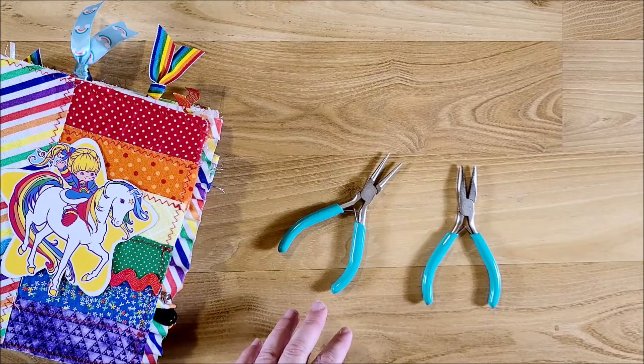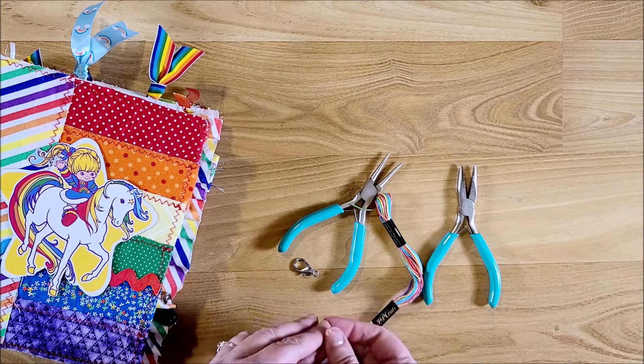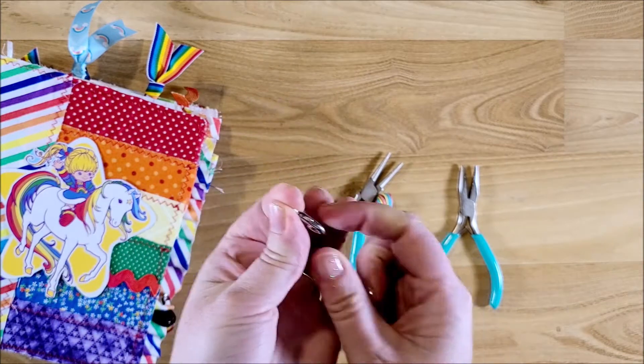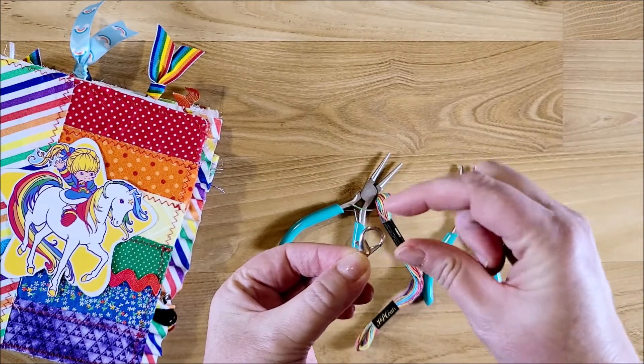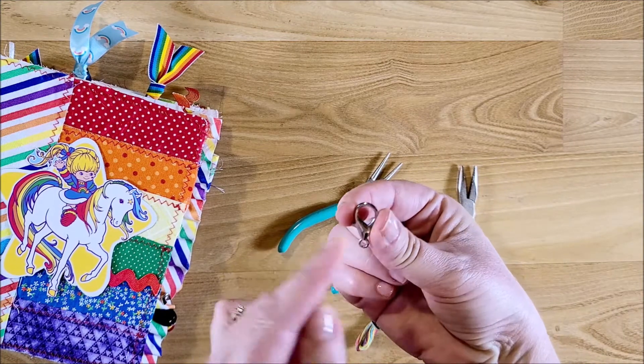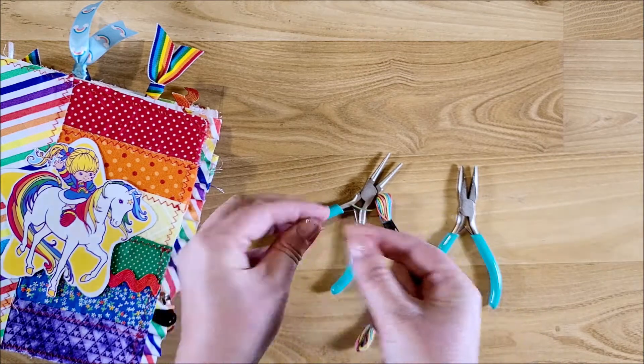And then I'm going to go ahead and make the charm dangle first. I have a lobster clasp and this one is probably about a half an inch or five-eighths inch from side to side.